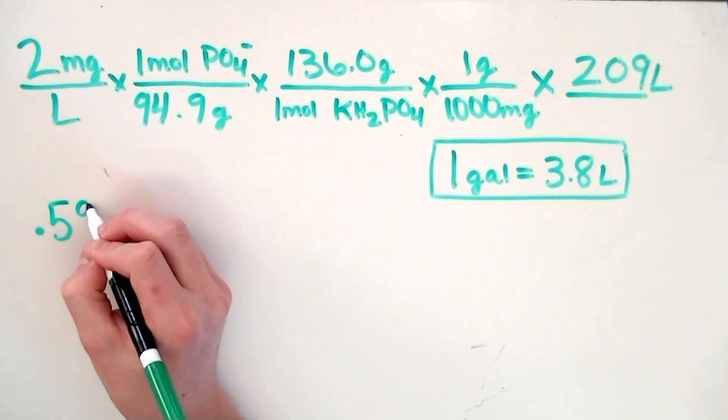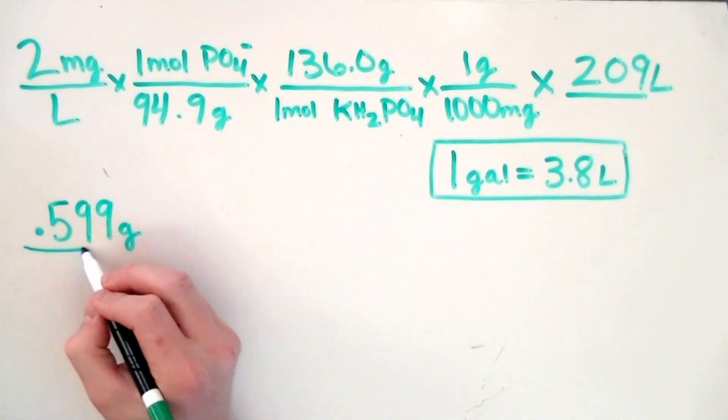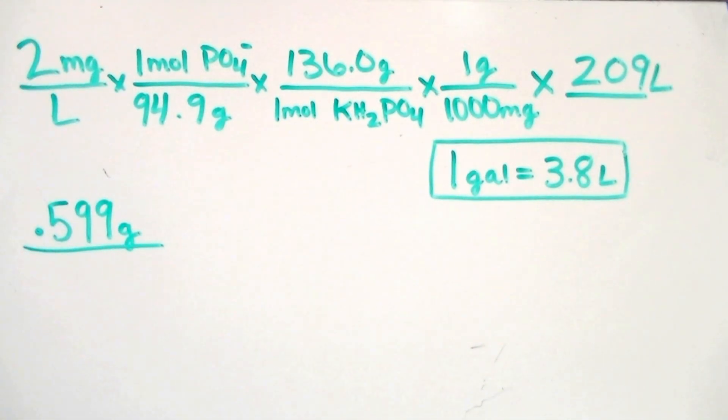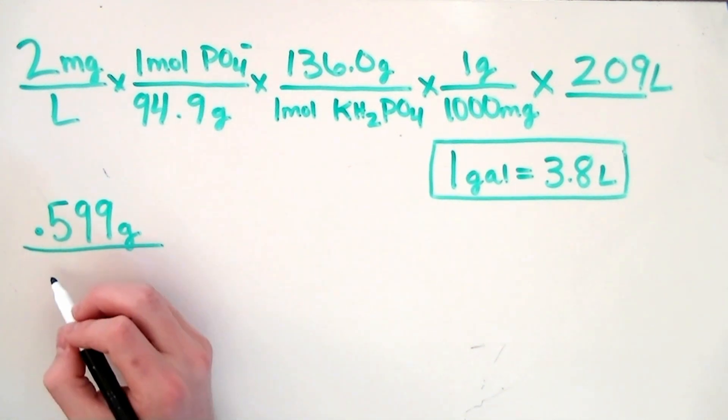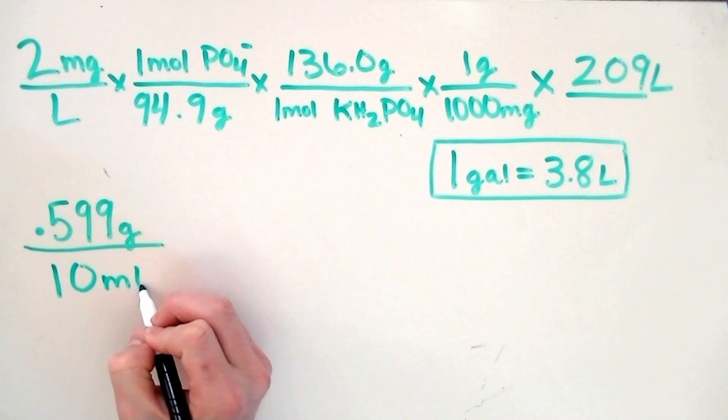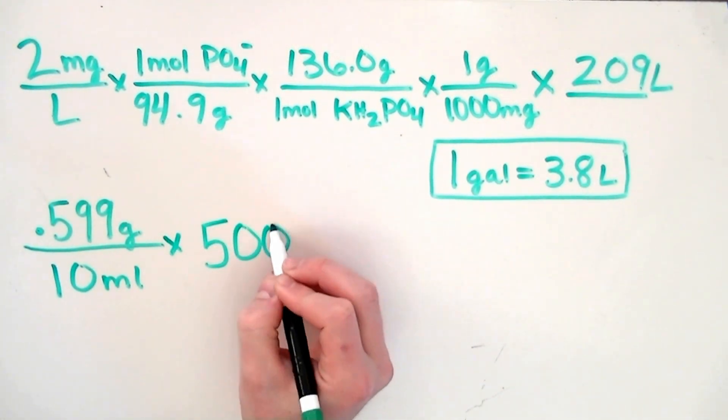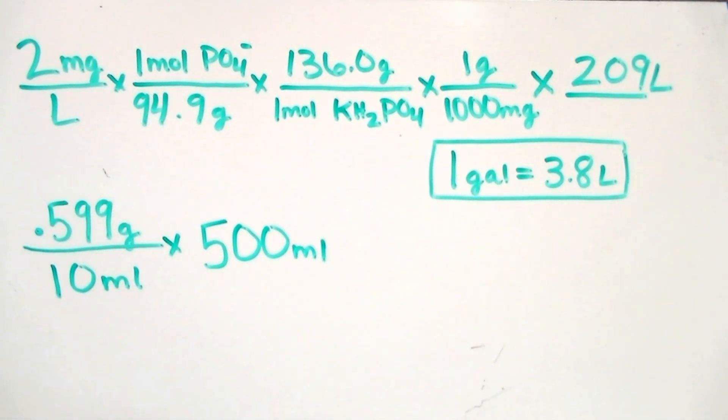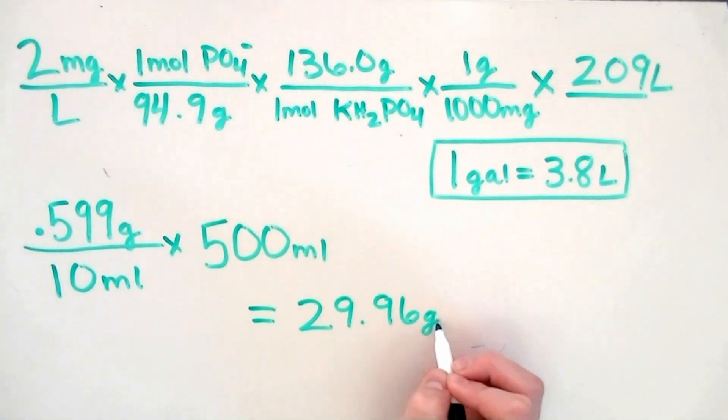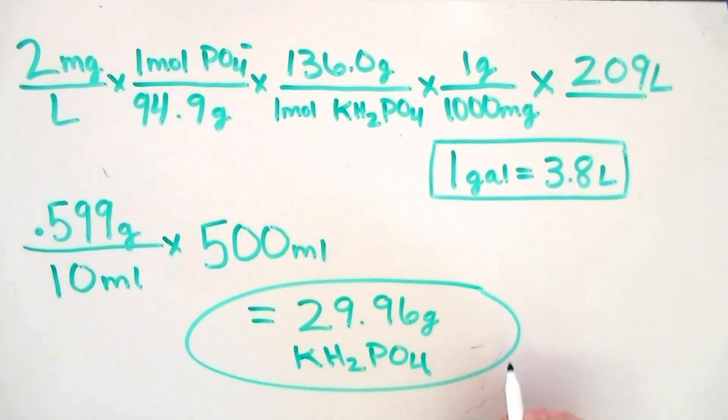When we do the math above, we end up getting 0.599 grams, which is the amount of our fertilizer we would add to our aquarium if we were dry dosing. Since we're making a solution, we get to decide the volume of each dose. We're going to choose 10 mils. The last step involves multiplying by 500 mils, which is the volume of the fertilizer container we're using. When we do this calculation, we end up getting 29.96 grams, which is the amount of potassium dihydrogen phosphate we need to add to our fertilizer container. Every time we extract 10 mils from this solution and add it to our aquarium, we'll be dosing a concentration of 2 milligrams per liter phosphate.